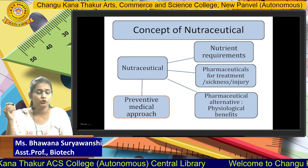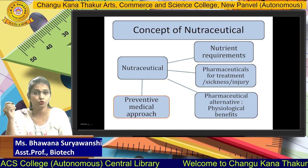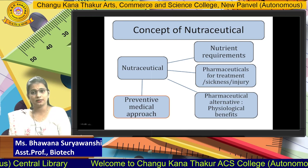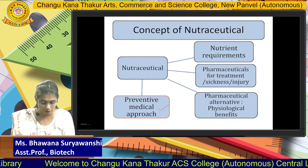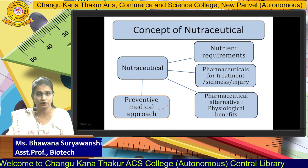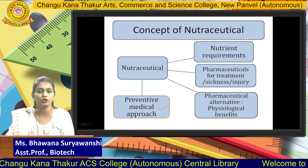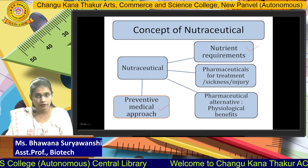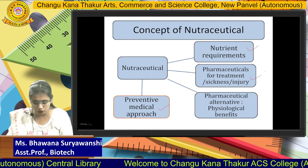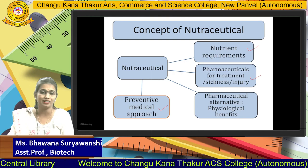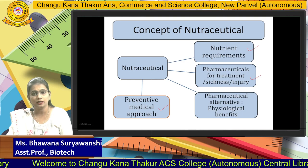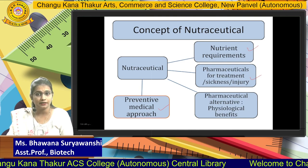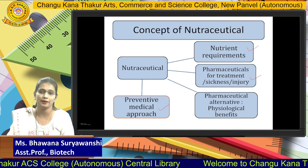How did the concept of nutraceuticals arise? It is not even new — it is a very ancient concept, but nowadays it has become famous as the concept of nutraceuticals. It is basically a preventive medical approach. The approach towards nutraceuticals is prevention of diseases. Nutraceuticals altogether fulfill nutrient requirements and have pharmaceutical value for treatment of any disease, sickness, or injury. It is also called a pharmaceutical alternative because it provides physiological benefits.